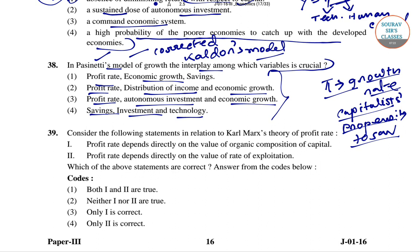This was described as Pasinetti's theorem or the New Cambridge equation. Pasinetti formulated rigorously the link, brought to light by the classics, between capital accumulation, profit rate and income distribution. In his later works he enlarged his analysis of growth by combining it with structural change, developing vertical integration as a new technique of analysis in 1981. For question 38, the right answer is option 2: profit rate, distribution of income and economic growth.